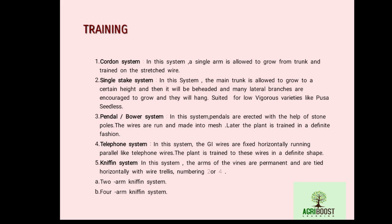Training and pruning are special and important practices in grape cultivation. Training systems followed include cordon system, single stake system, pendal or bower system, telephone system, and Kniffin system. Among these, the pendal or bower system is the most common and popular, having the highest cost-benefit ratio of 1:2.9. In the cordon system, a single arm is allowed to grow from the trunk and trained with a stretched wire.